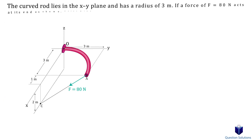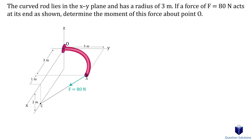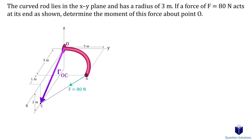Let's take a look at a problem involving moments in the X, Y, and Z plane. We have a bent rod with a force applied at the end, and we need to figure out the moment created about point O. To find the moment about point O, we use the cross product equation — we take the cross product between the force and a position vector from point O to C. First, we have to express the force in Cartesian form, so let's write down the locations of all the points of interest.